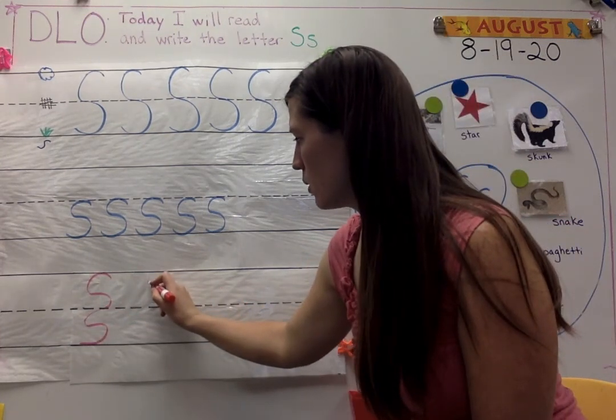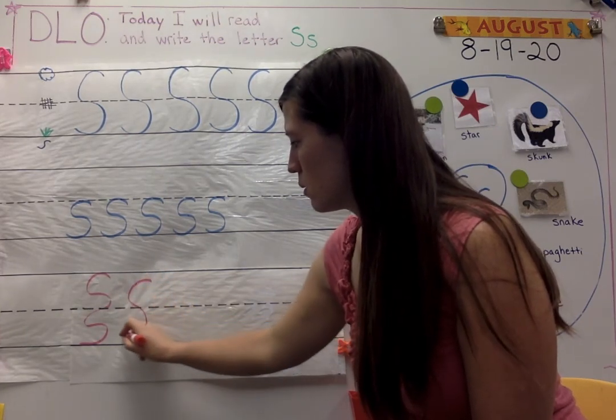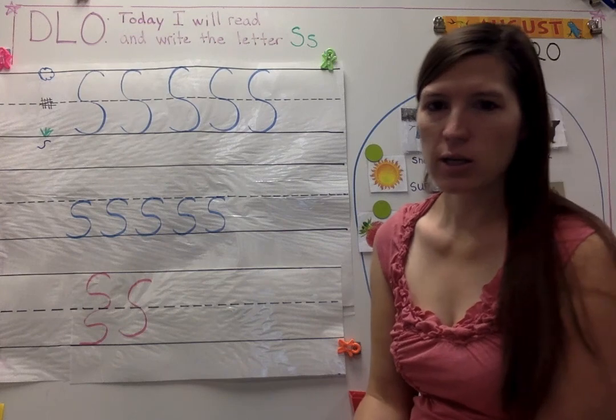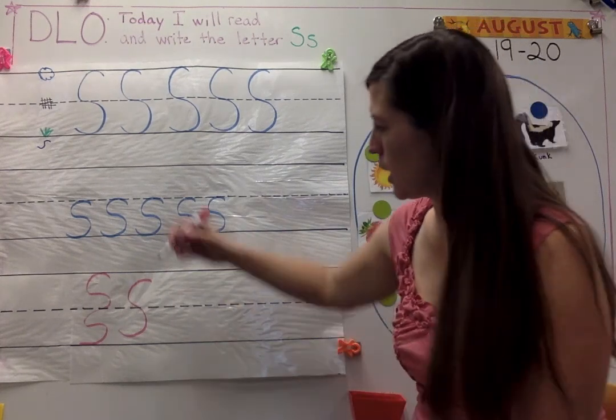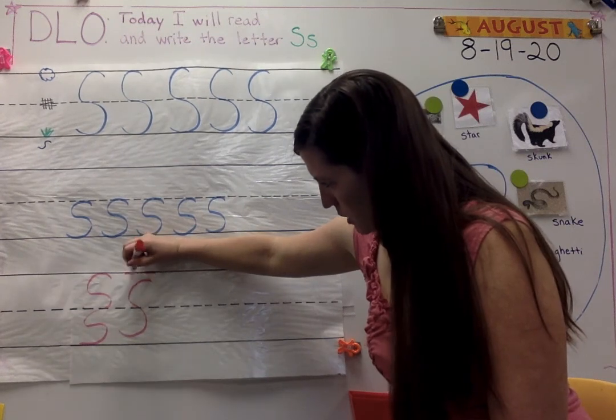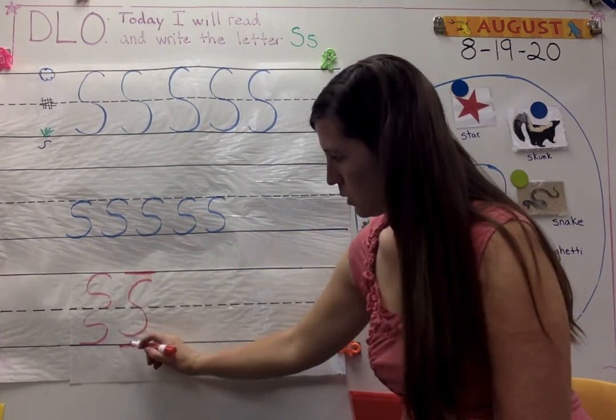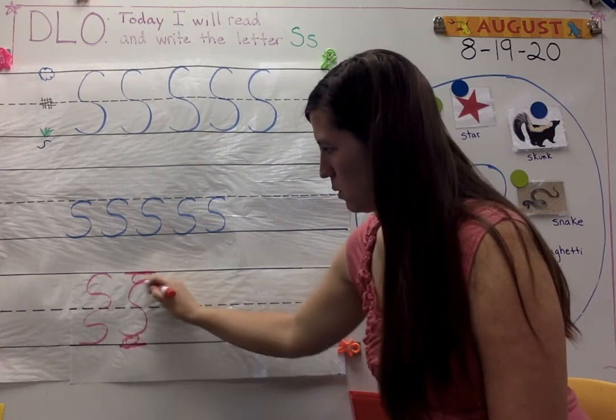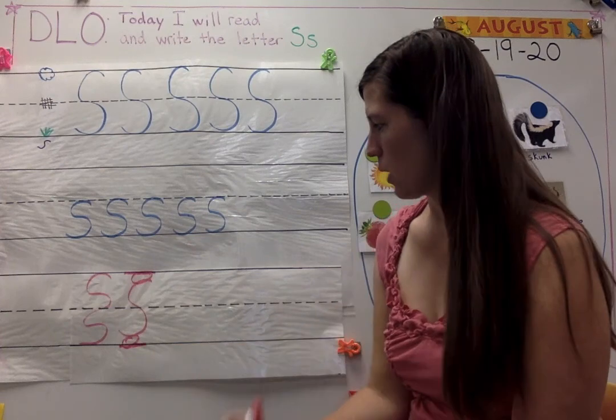How about this? Is that a good capital S? No, it's not. I didn't touch the sky. I didn't touch the ground. Look, there's a space here. We don't want spaces. We want it to touch the sky and touch the ground.